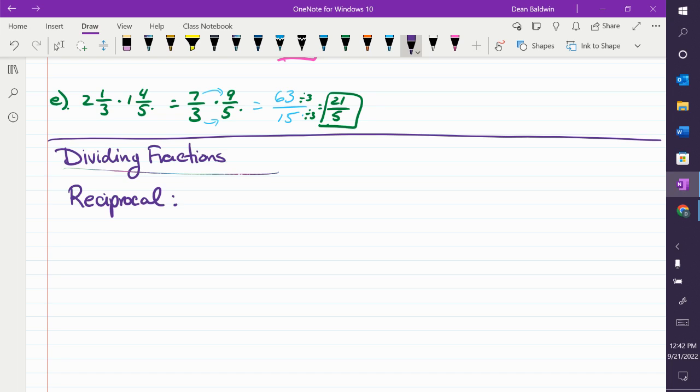Have you heard of the term reciprocal? No. All right. If I have 2 over 3, the reciprocal is just take the fraction and flip it. So, 3 over 2. These are reciprocals.